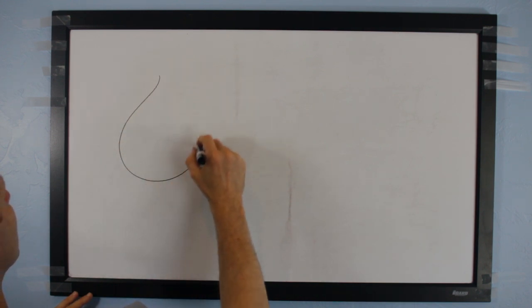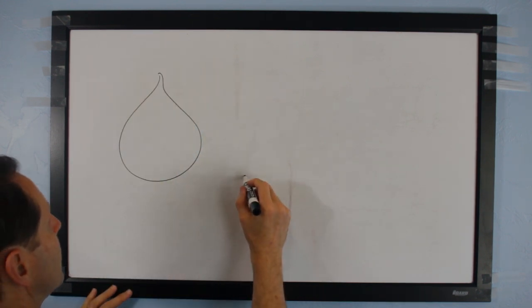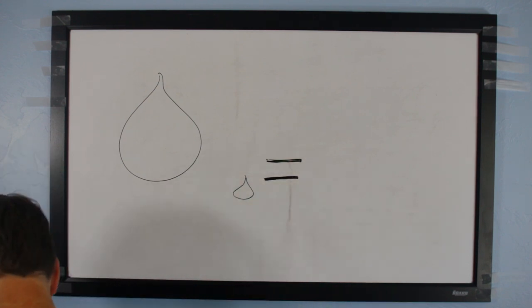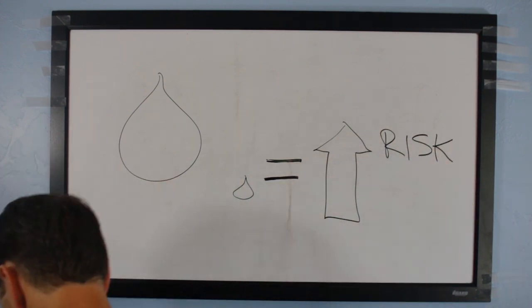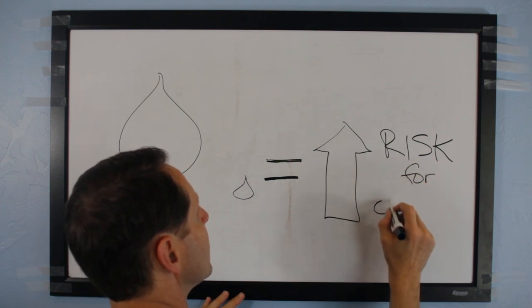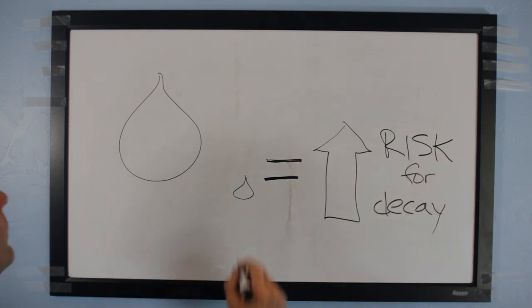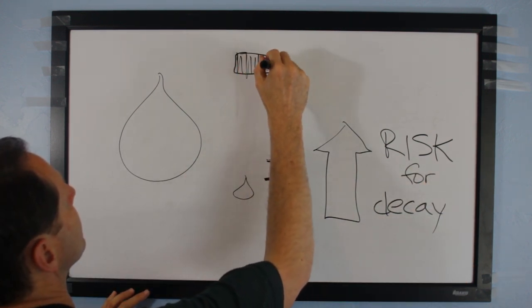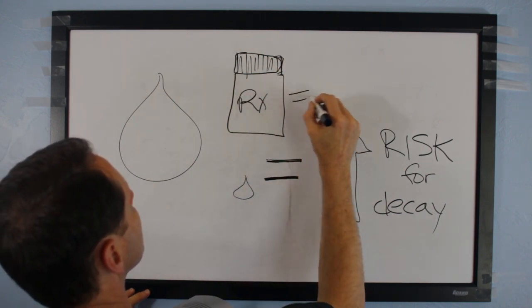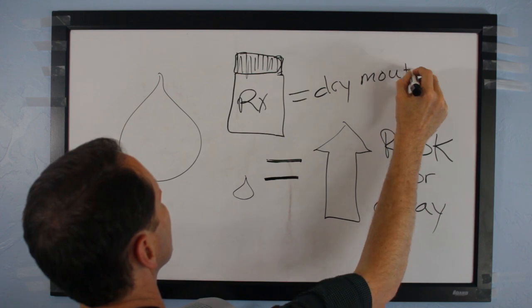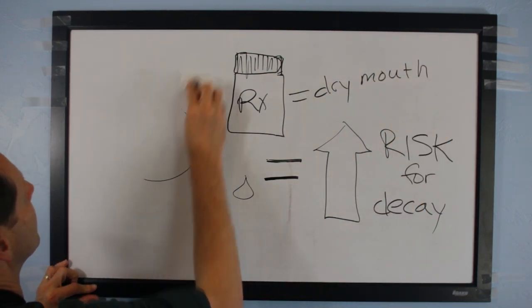One more factor is saliva. Saliva neutralizes the acids produced by the Streptococcus mutans. People with no or little saliva are at high risk for tooth decay. This is becoming a big problem because many medications cause a dry mouth.